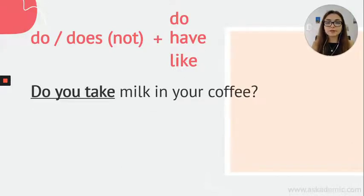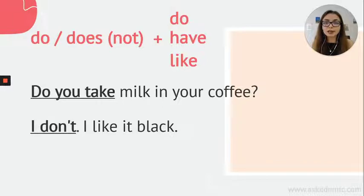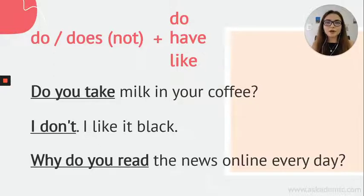Do you take milk in your coffee? The answer can be simply 'No, I don't.' You don't have to say 'No, I don't take milk in my coffee — I like it black.' You can simply say 'No, I don't.' This is a short answer for do and does questions. And if you want to ask a WH question — who, where, when, what, why — you put the WH word at the beginning and make a regular question sentence. Like: Why do you read news online every day? These were the basic uses of simple present tense.